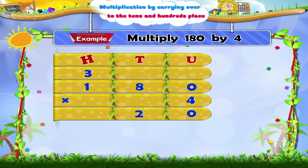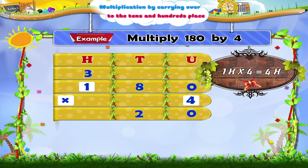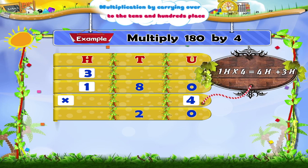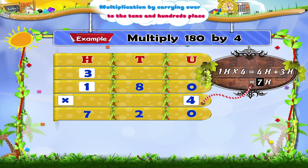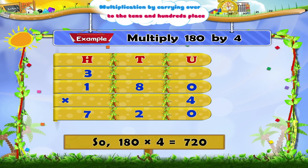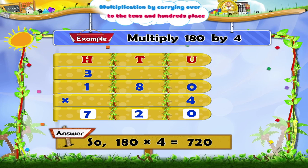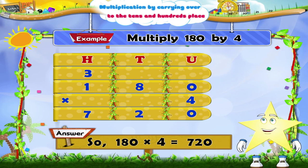Now multiply the hundreds digit 1 in 180 by 4. We get 4 hundred. Add to this the carried over 3. We get 7 hundred. Write it in the product in the hundreds place. The product is seven hundred and twenty. I am sure you have enjoyed today's multiplication sums.